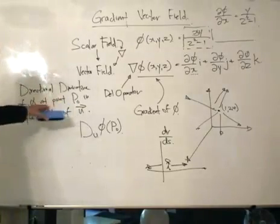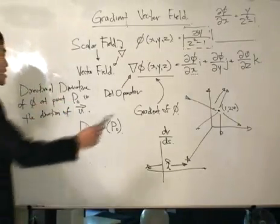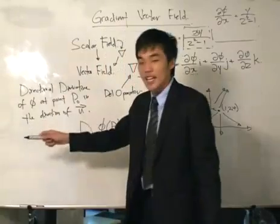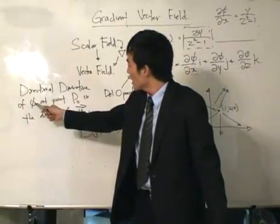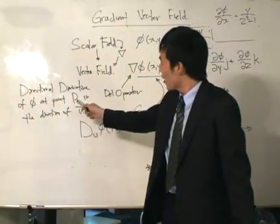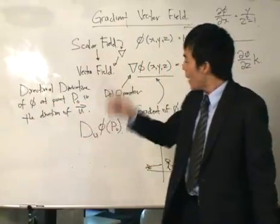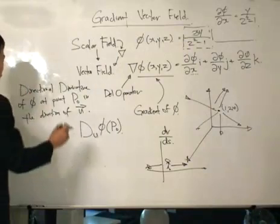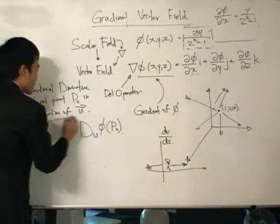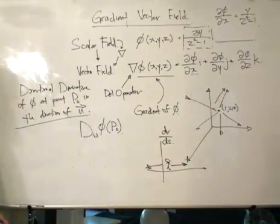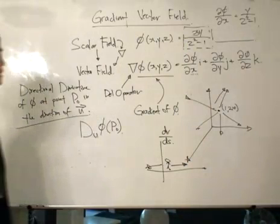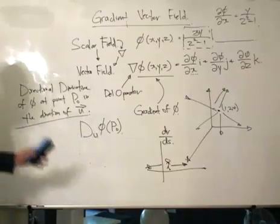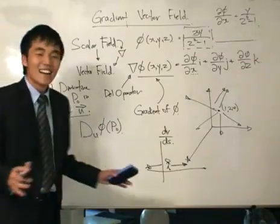So the directional derivative of phi at point zero measures the rates of change of phi starting from the point P0 or at P0 depending on which direction I travel, and that direction I travel is given by u over here. So I hope we kind of know what's going on over here.